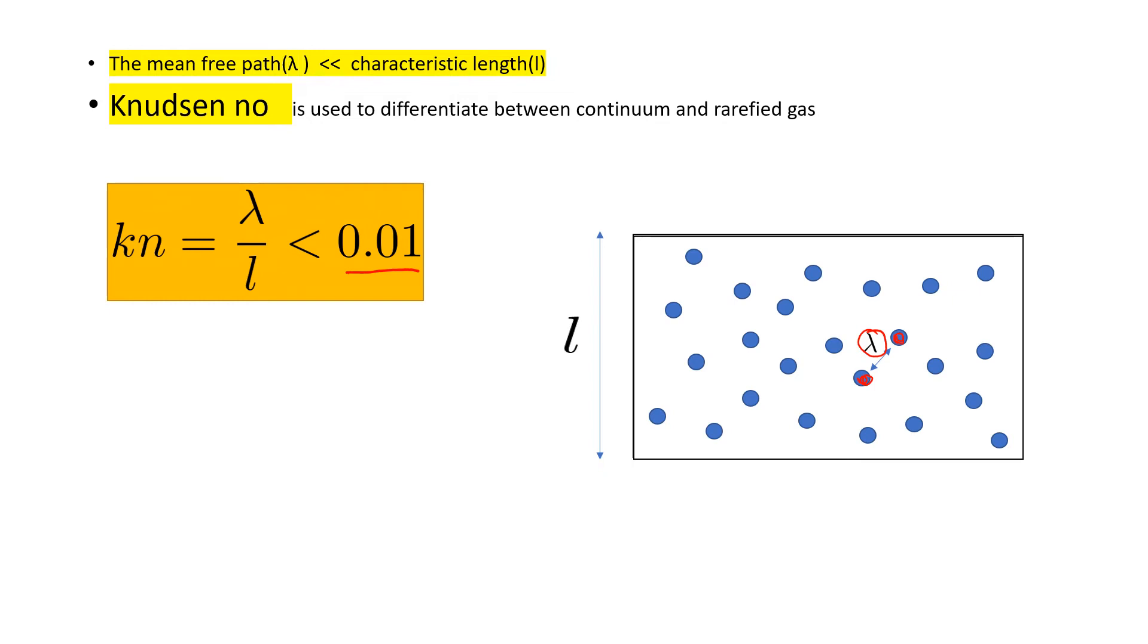If the Knudsen number is more than 0.01 then the rarefied approach should be taken. Here lambda is the mean free path and L is the characteristic length. That can be either breadth, length or diameter.